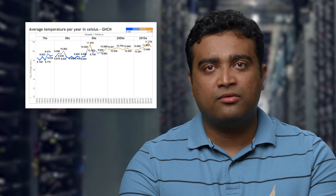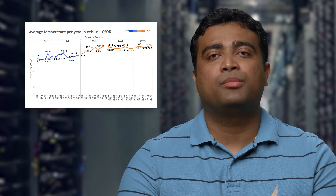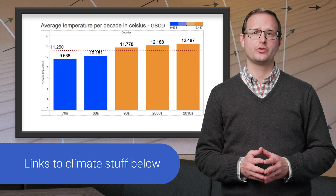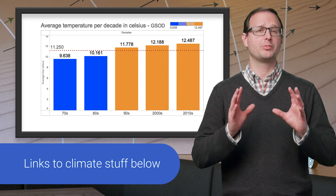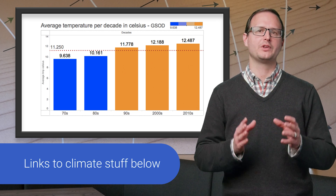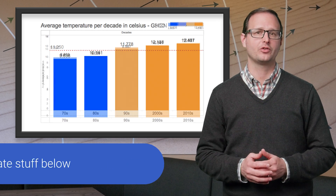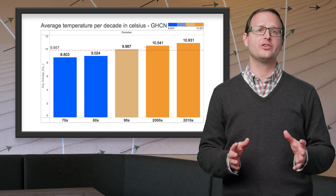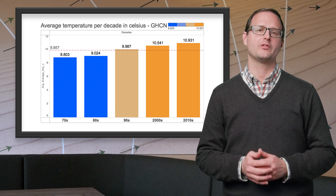The first thing I noticed was a trend of increasing average temperatures each decade for both data sets, which led to further analysis. Climate science is complicated, so let's dive into the details. Many variables can influence our results. Our data sets are particularly susceptible to bias from the number of stations reporting, their relative locations, and the frequency of their observations.